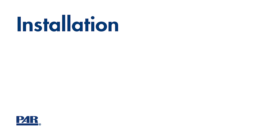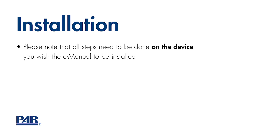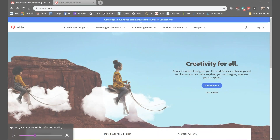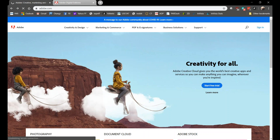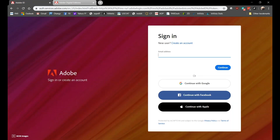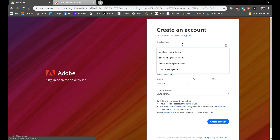Now let's go through how to install an e-manual. Note that all of the steps shown should be done on the device where you want the e-manual installed. If you do not already have an adobe.com login, you will need to create a free account. To create an account, go to adobe.com and click on the sign-in button, then select create an account and fill in your information.